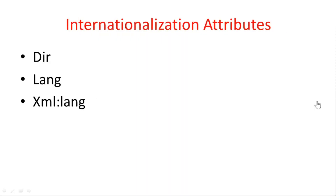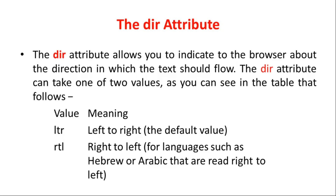There are three internationalization attributes: dir, lang, and xml:lang. We have to specify the language. The xml:lang attribute will be used in HTML. The dir attribute allows you to indicate to the browser the direction in which the text should flow.